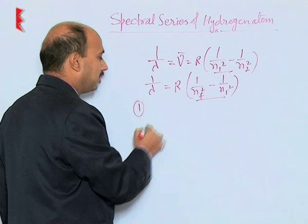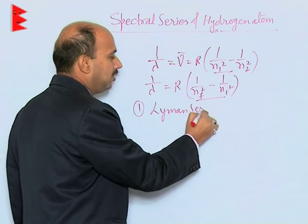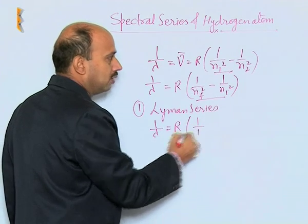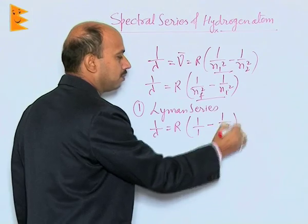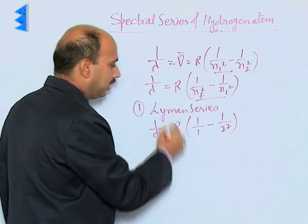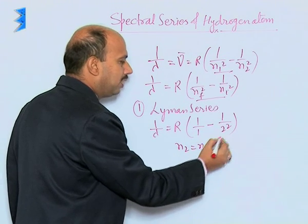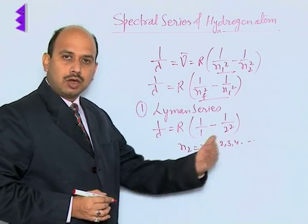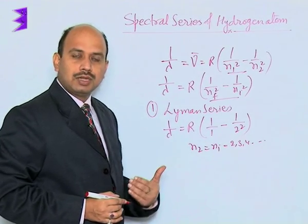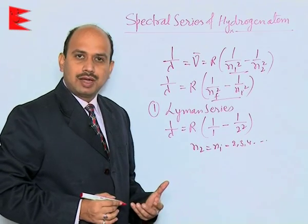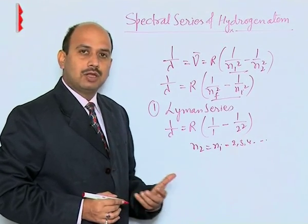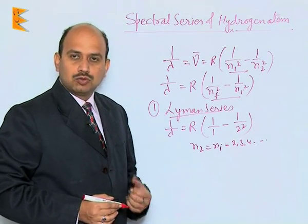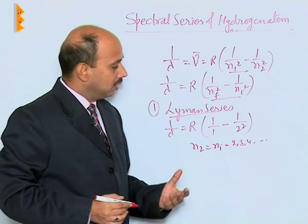The first one is the Lyman series. In the Lyman series, 1 upon lambda is equal to R into 1 upon 1 square minus 1 upon n2 square, where n2 (initial state) can be 2, 3, 4, and so on. When the electron jumps from the second, third, or fourth orbit to the first orbit, radiation is emitted. The series of wavelengths obtained is called the Lyman series, and its spectrum lies in the ultraviolet region. We can also get the maximum and minimum wavelength emitted in this series.